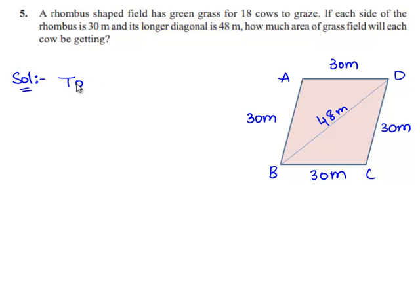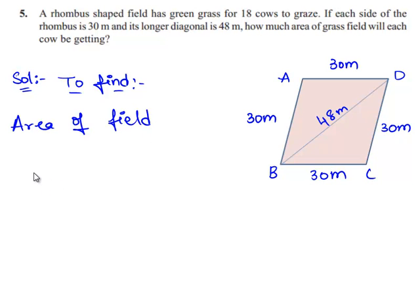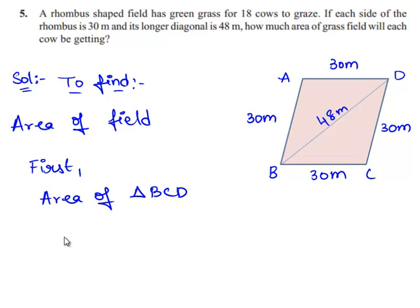So we need to find the area of the rhombus shaped field. To find the area of the field, we shall first find the area of triangle BCD.